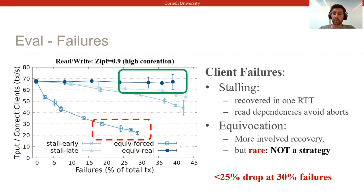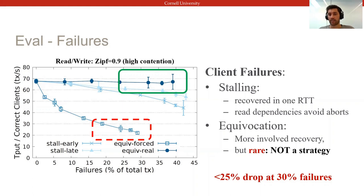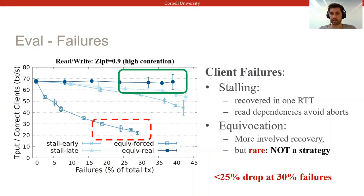Dealing with equivocation is more involved and costly, and in the red section we evaluated an artificial scenario in which clients can equivocate at will. However, Basel does not allow clients to choose their own decision, so not only is equivocation detectable, but it is also exceedingly rare to succeed, making this strategy infeasible to pursue in practice.